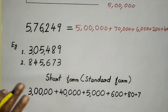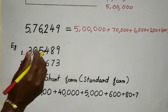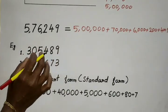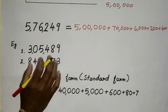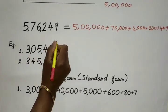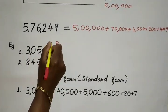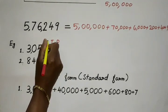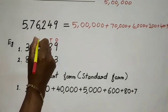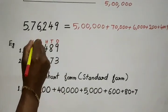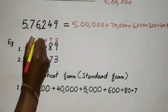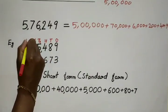You remember the first step — let us write the place where each digit is placed: 1's, 10's, 100's, 1000's, 10,000's, and lakh.